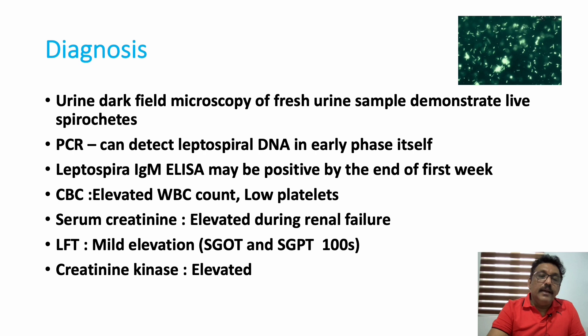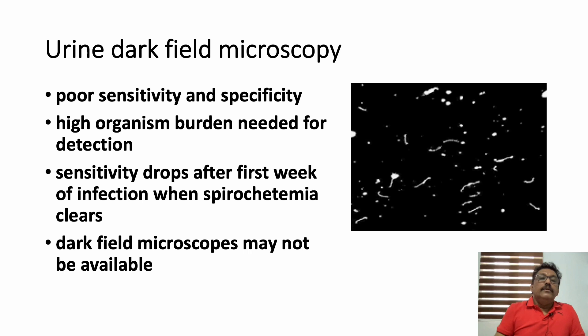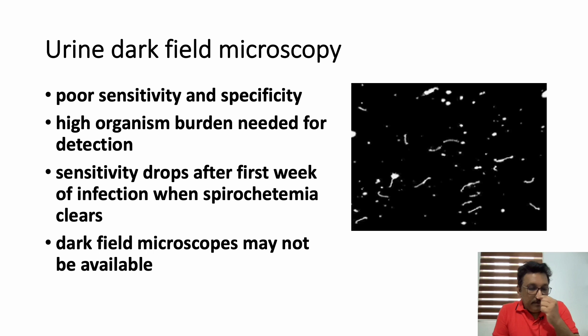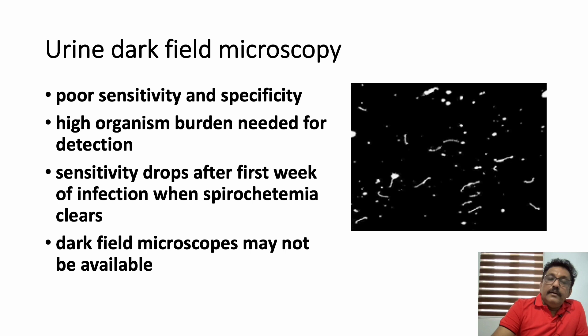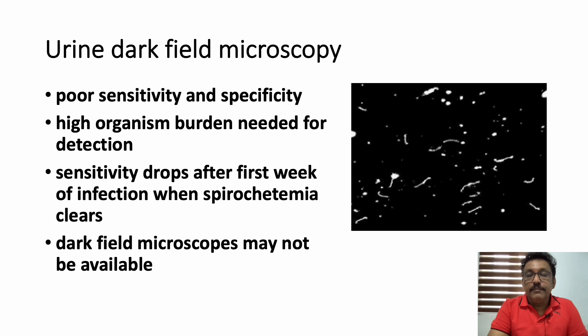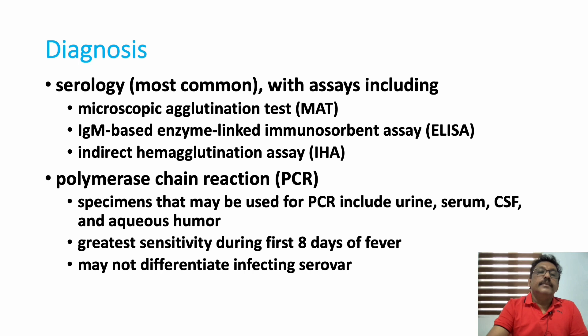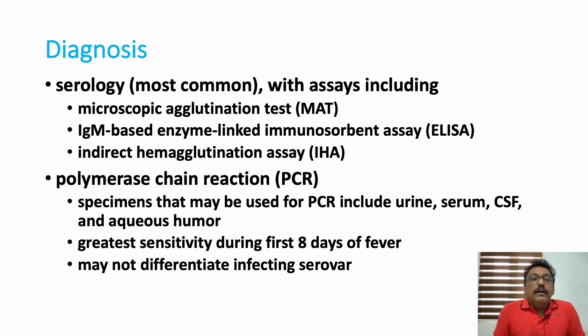Dark field microscopy has poor sensitivity and specificity; if positive, it indicates high organism burden. Its sensitivity drops after the first week. For serology, the microscopic agglutination test (MAT) is commonly available; IgM ELISA is available; indirect hemagglutination assays are also available; PCR is available depending on your lab facility. These investigations can be requested as appropriate.